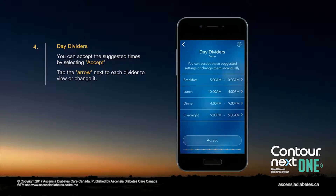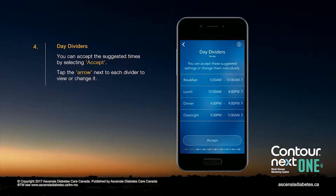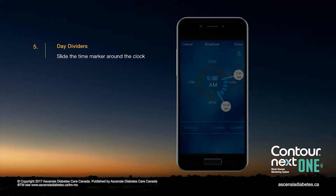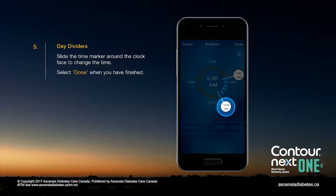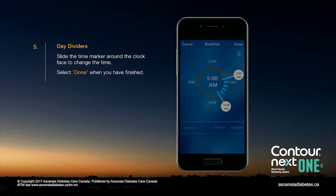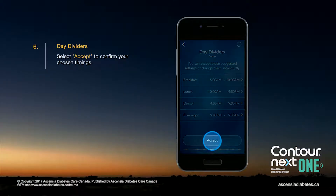You can accept the suggested times by selecting Accept, or tap the arrow next to each divider to view or change it. Slide the time marker around the clock face to change the time. Select Done when you have finished, then select Accept to confirm your chosen timings.